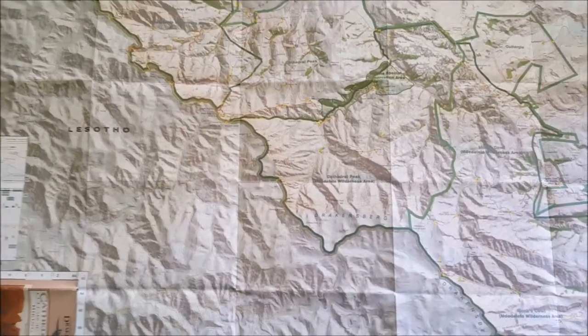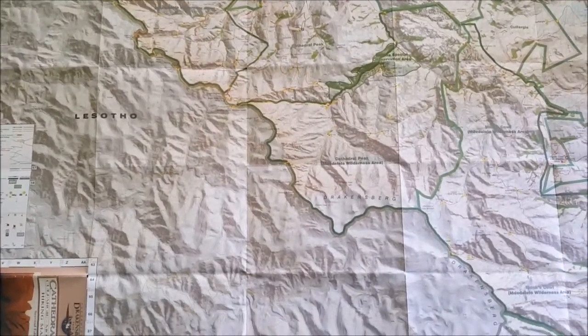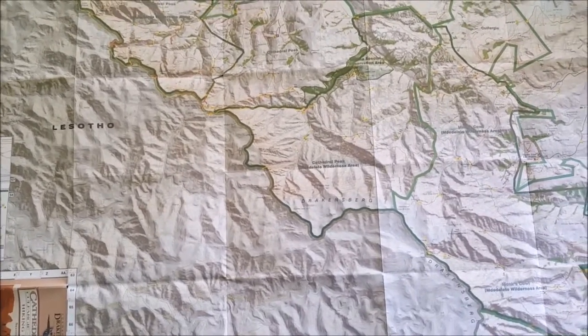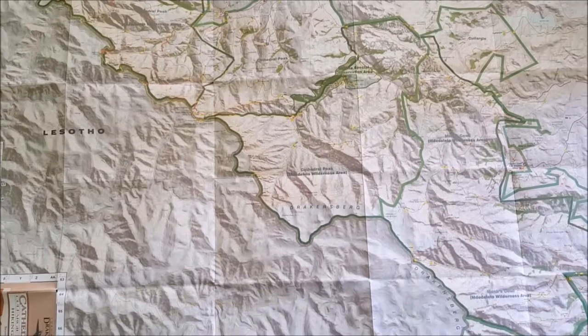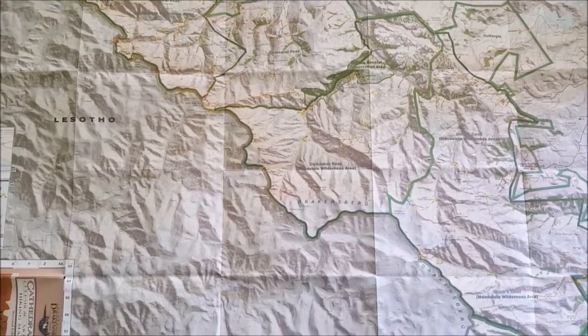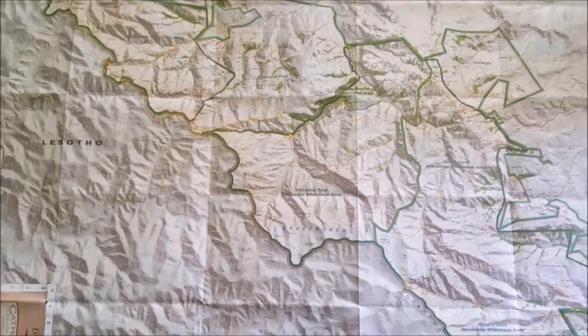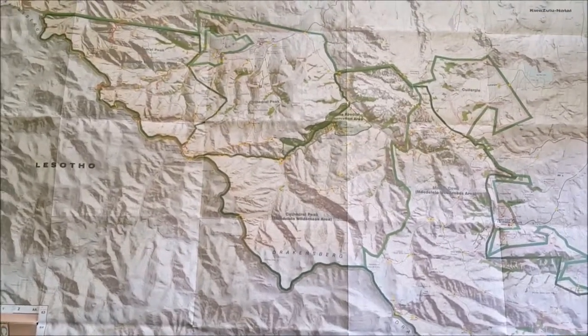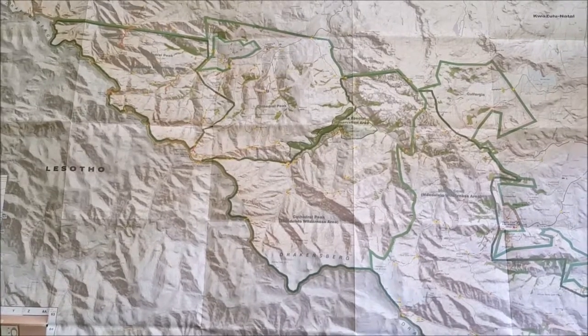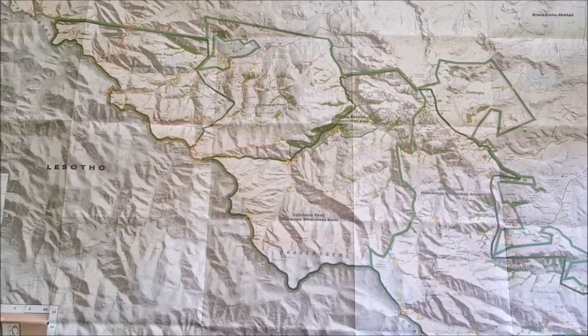This video is about finding declination on a map, what the declination is for a particular area, and then making a calculation to adjust for changes over time in declination. The Earth's magnetic field shifts over time by a certain percentage, so if you have an old map you need to make adjustment for this.